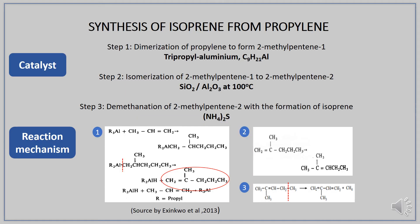Moving on to the catalysts used in the synthesis of isoprene from propylene: Step 1, dimerization uses tripropyl aluminium. Step 2, isomerization uses silicon dioxide and aluminium oxide. And Step 3, demethanation uses ammonium sulfide.